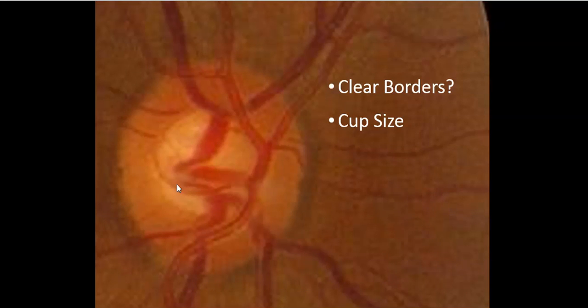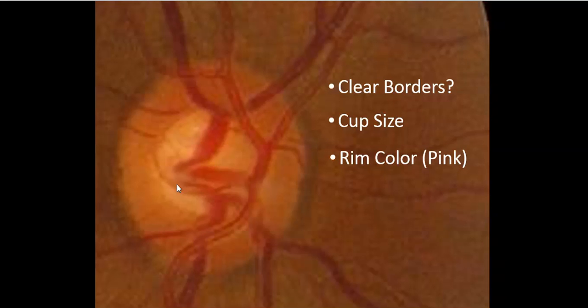We address whether we see clear borders and what the cup size is. The next thing to consider is what's the color of the actual rim itself. Is it a healthy pinkish or orangish color, or do we see a more yellowish, whitish color, which would suggest that there's a disease that's been present in the neural tissue.